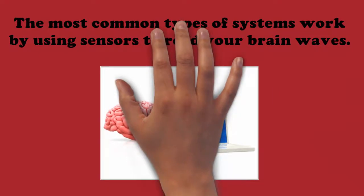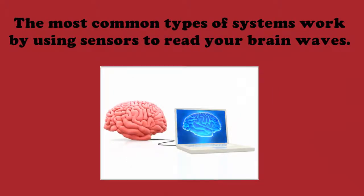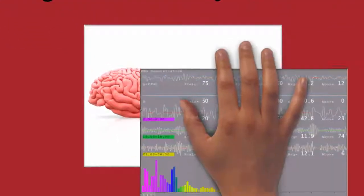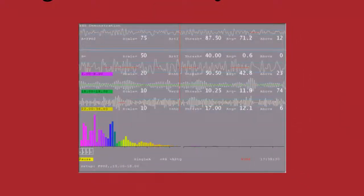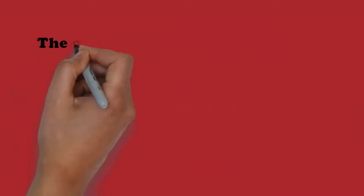The sensors are connected to a computer and read your brain waves, which show up on the practitioner's computer screen as a series of wavy lines. Depending on the system and the game being played, the client sees images, screens with video games, or even movies.